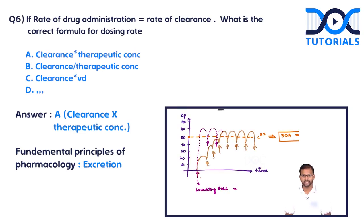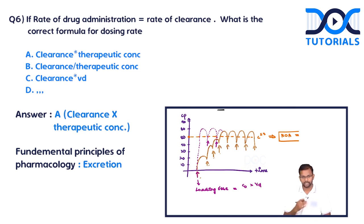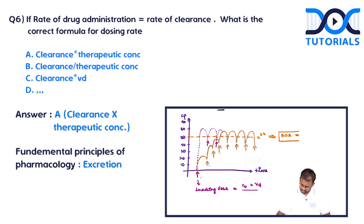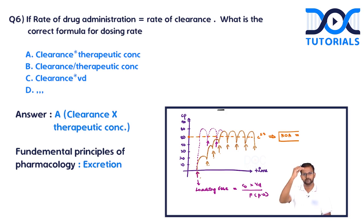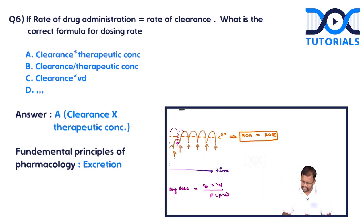Loading dose is calculated as initial plasma concentration multiplied by volume of distribution. If the drug is given by the oral route, we divide by bioavailability (F), since bioavailability is the limiting factor. Once you reach concentration above the steady state, the dose needed to maintain concentration around steady state is called the maintenance dose.